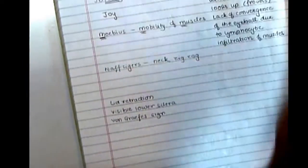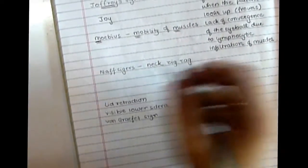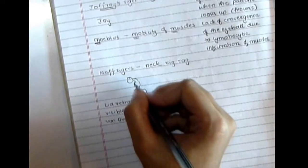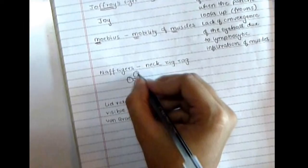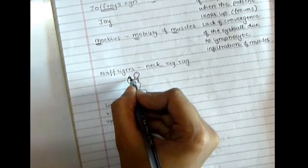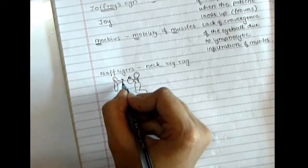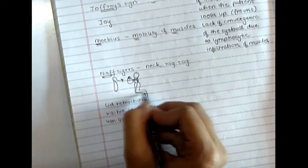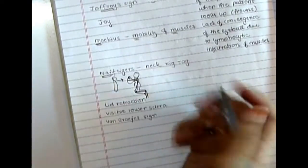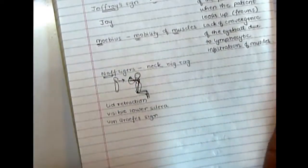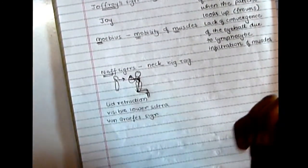The Naffziger sign: you ask the patient to extend their neck. If you observe from behind while the neck is extended, you can see the eyeballs protruding. I remember this by thinking of the neck making a zigzag shape. So when the patient is sitting and the neck is extended, the protruding eyeballs are visible from behind — that's the Naffziger sign.